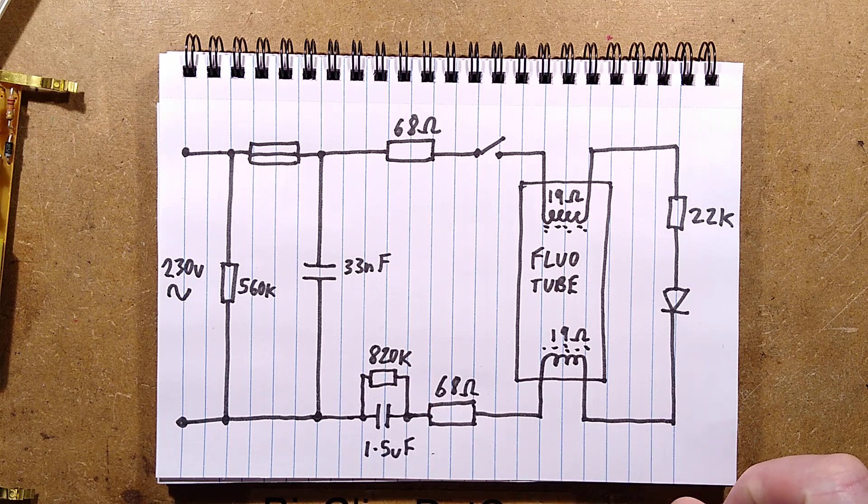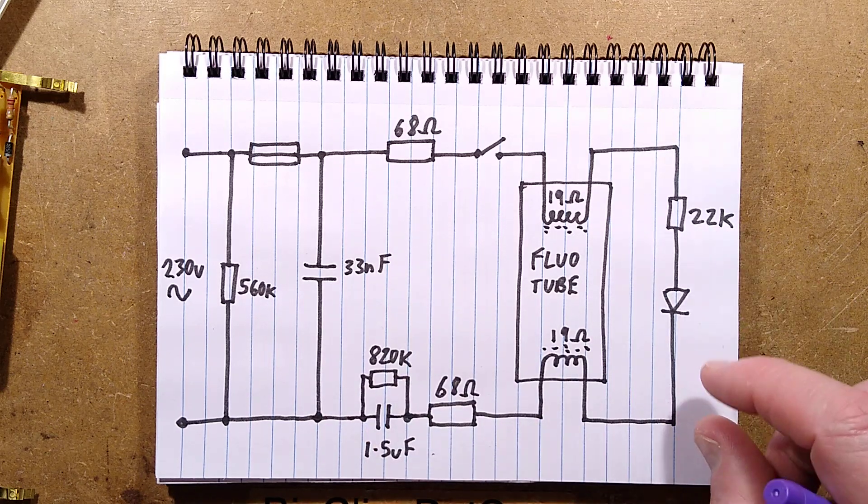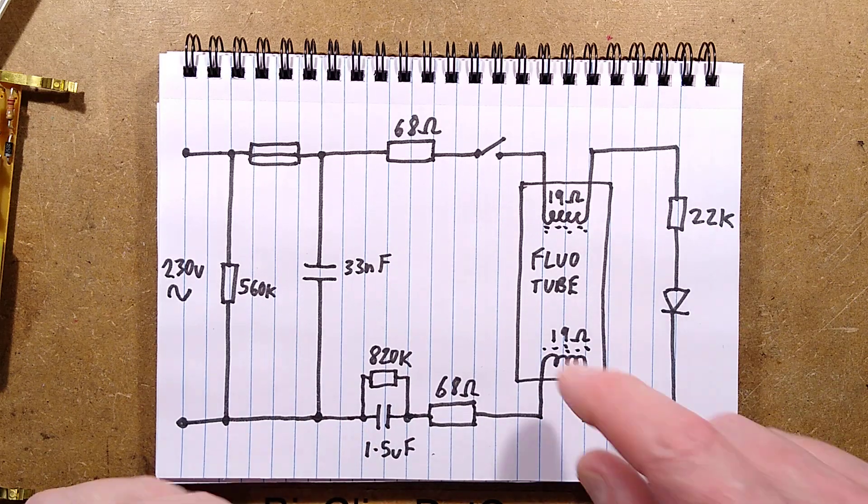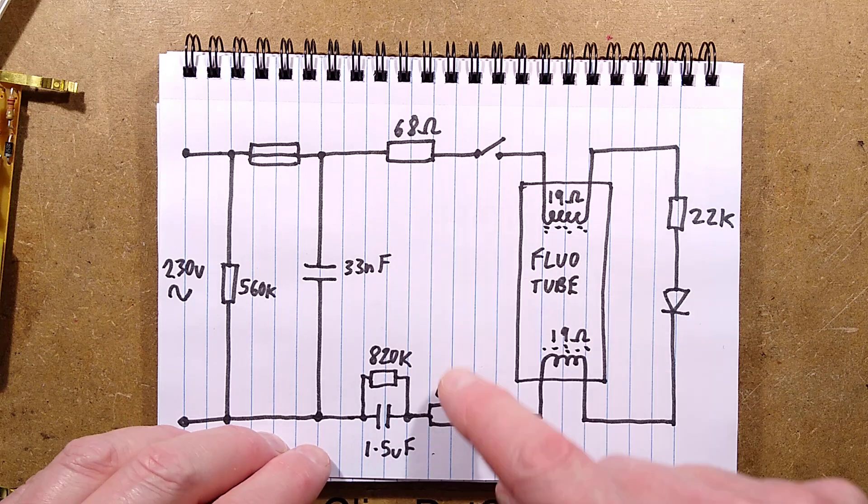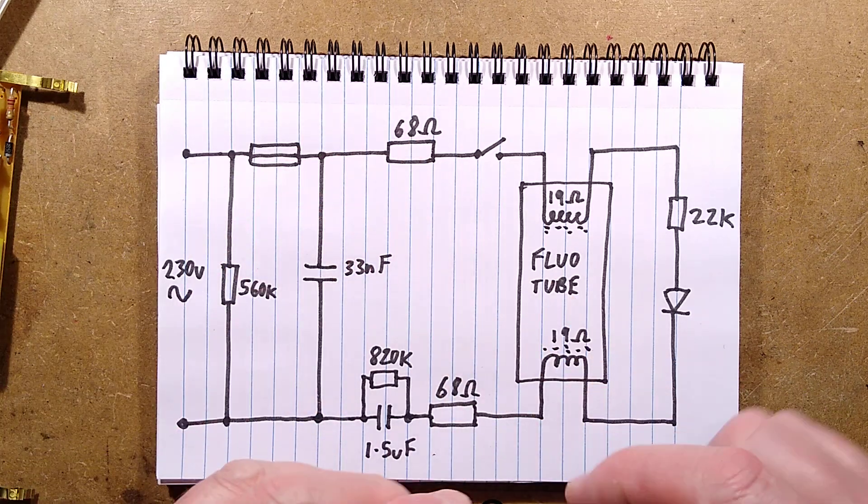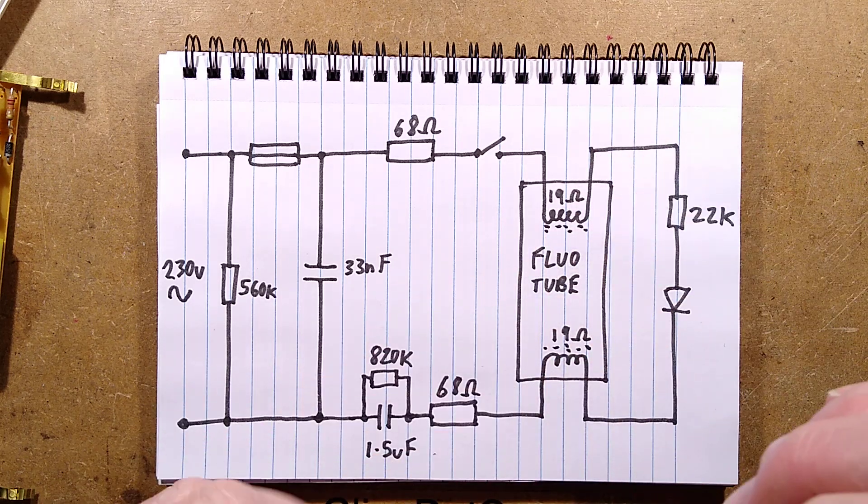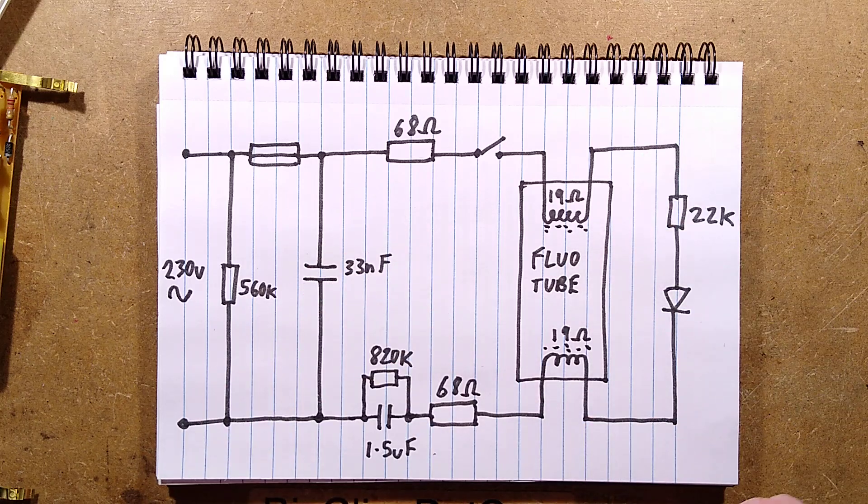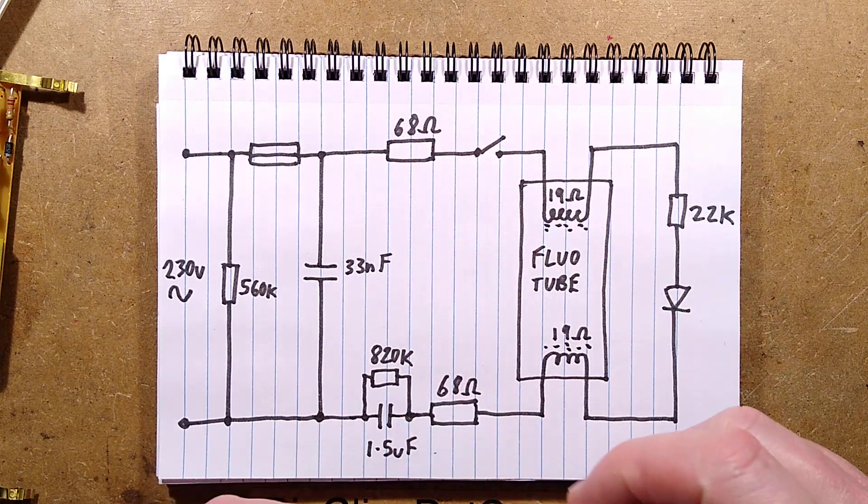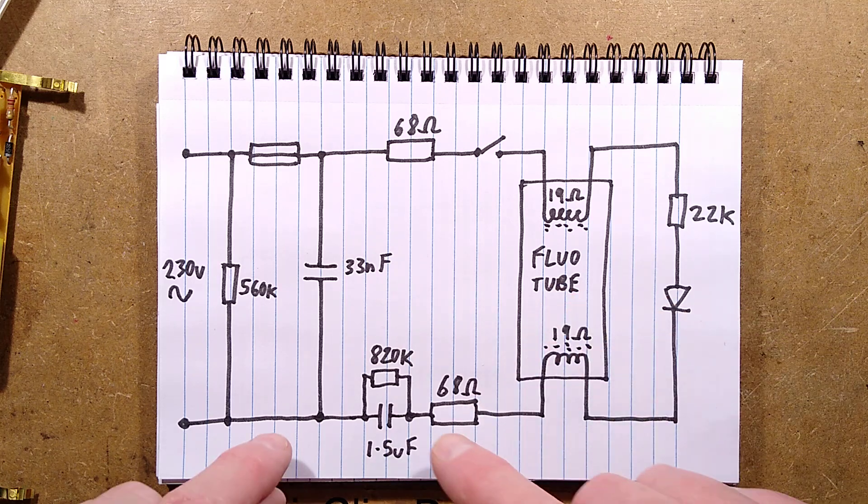It's an odd arrangement. They've optimized. All these component values are fairly critical to that circuit operation. The 68 ohm resistors—quite high power—they're needed because when you light a fluorescent tube, in each half wave it actually goes out and then it has to re-strike.